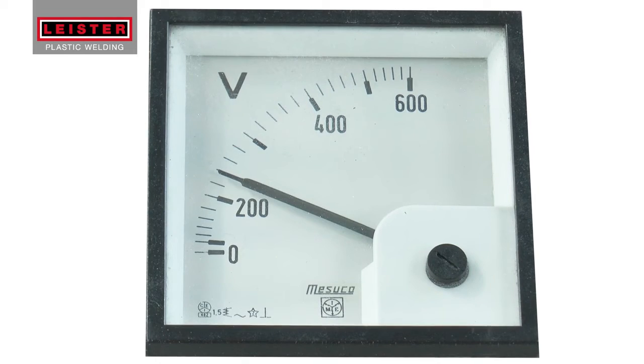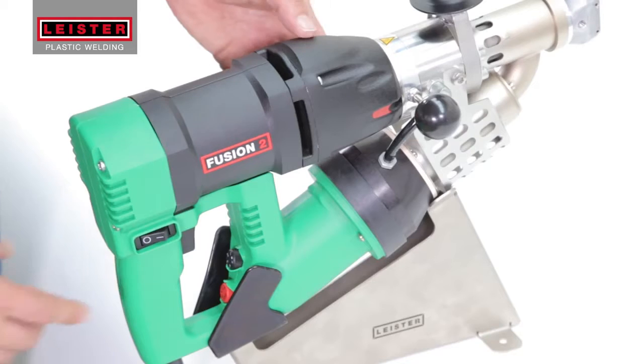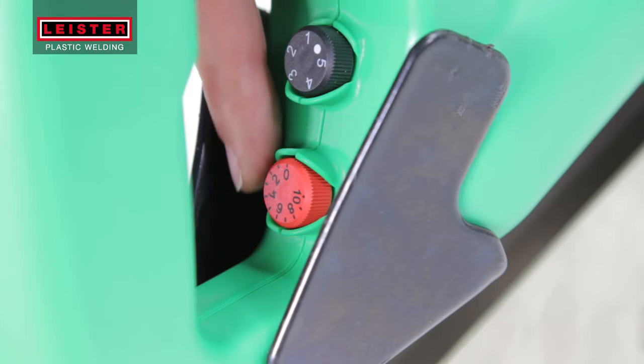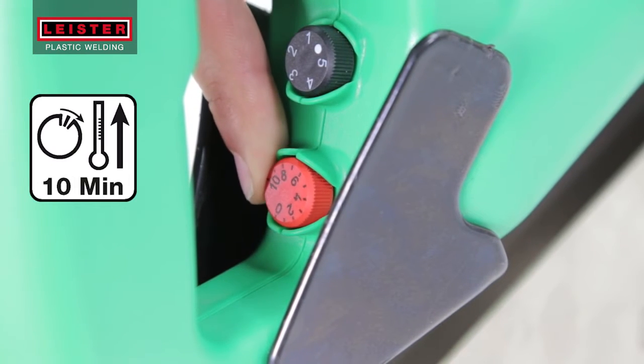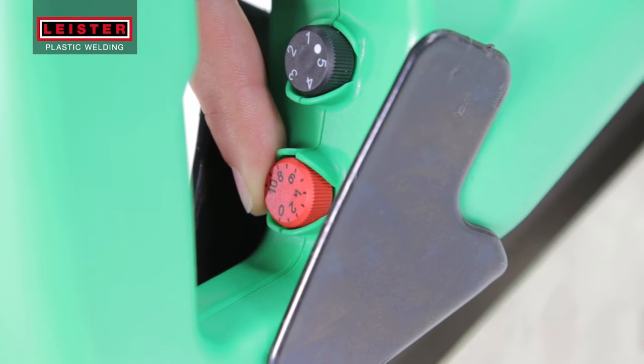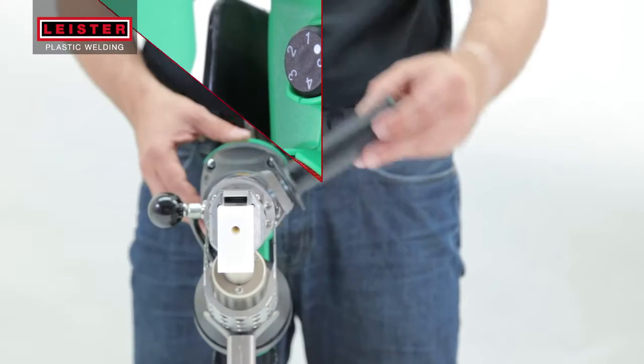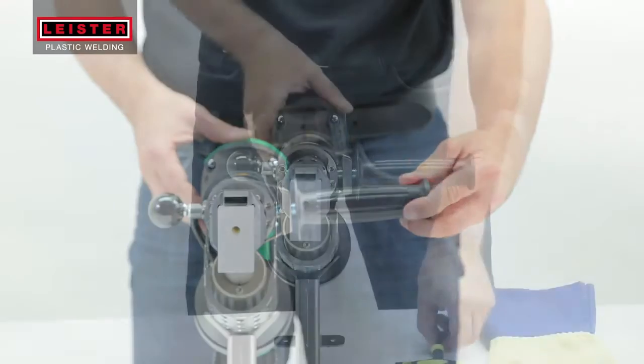Always make sure your power source voltage is correct and stable. Press the switch to turn on the blower. Adjust the red temperature potentiometer to position 7 and let the tool heat up for 10 minutes. Meanwhile, position the handle and tighten.